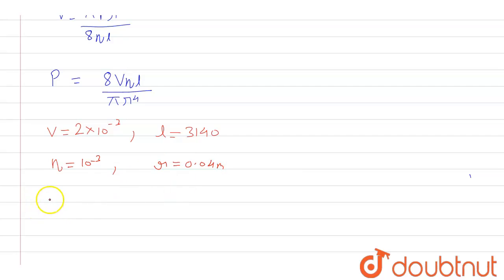So now to calculate pressure we will have to put all these values in the above equation. That means 8 into 2 into 10 raised to the power minus 3.